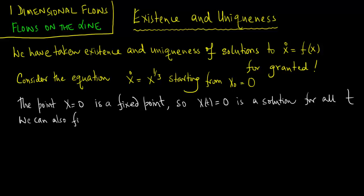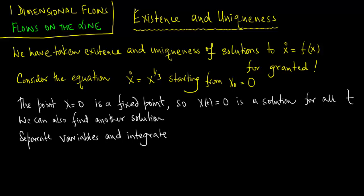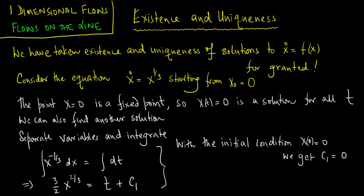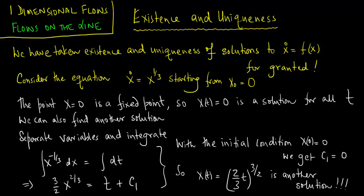We can also go ahead and find another solution. We start by separating the variables and integrating. Evaluating the integral of x to the minus a third and the integral of dt, we get 3 on 2 x to the two-thirds is equal to t plus an arbitrary constant. With the initial condition x of 0 is equal to 0, we get c1 is equal to 0. So x of t is equal to two-thirds t to the power of 3 on 2 is another solution to this differential equation.